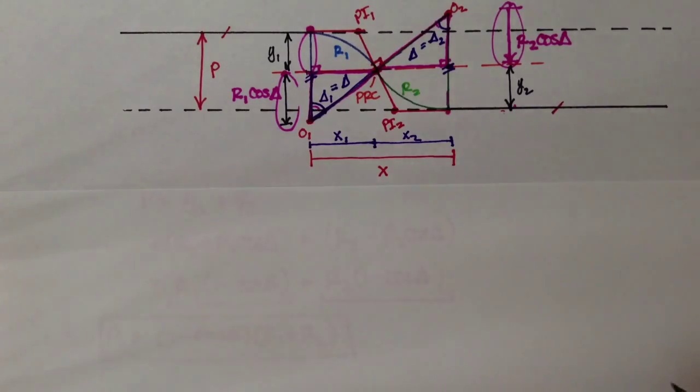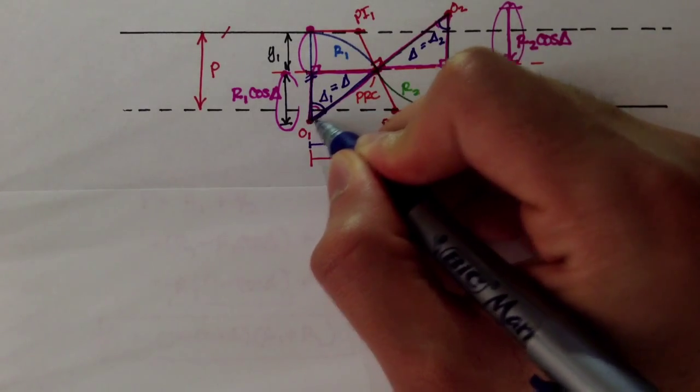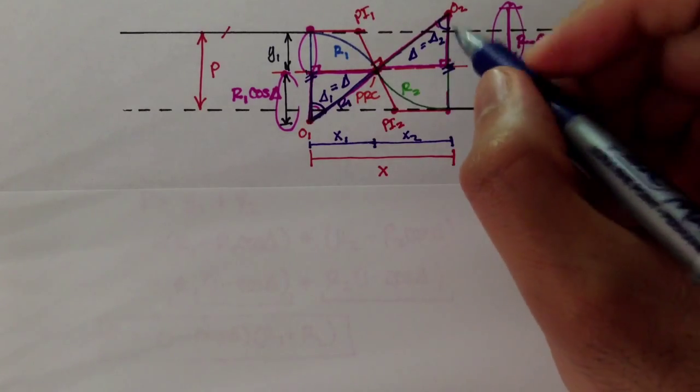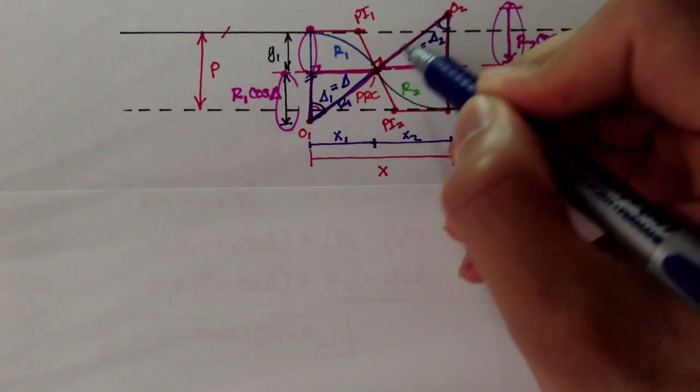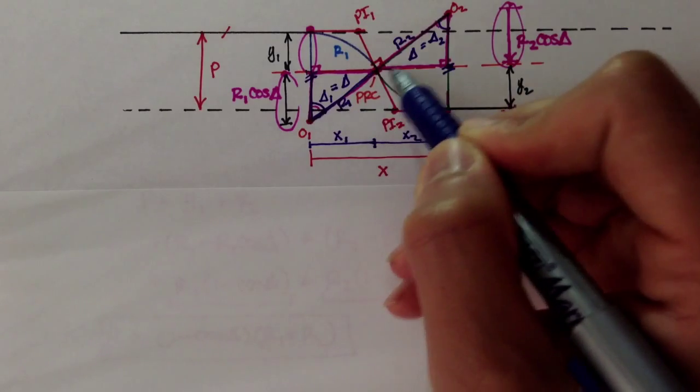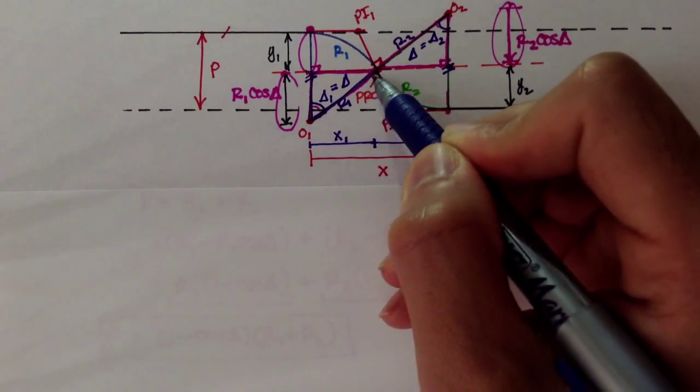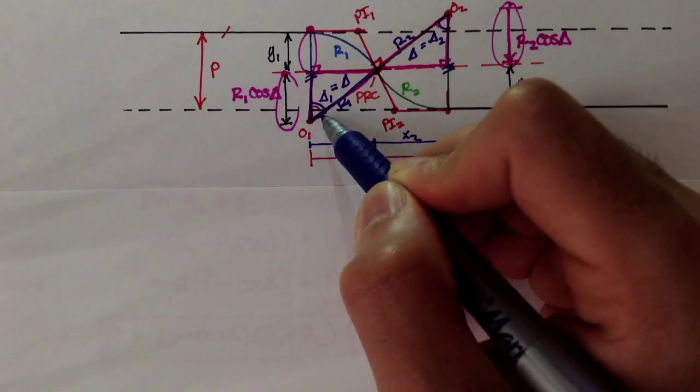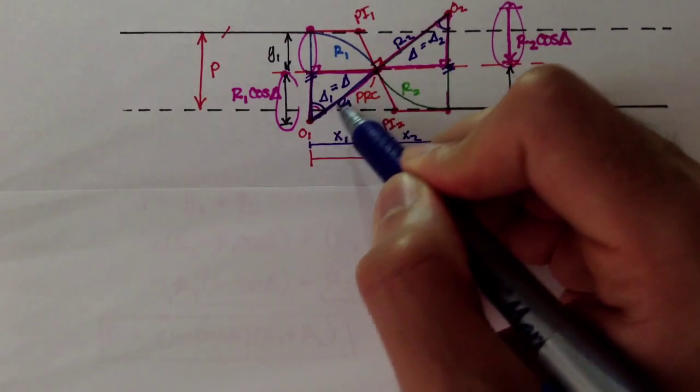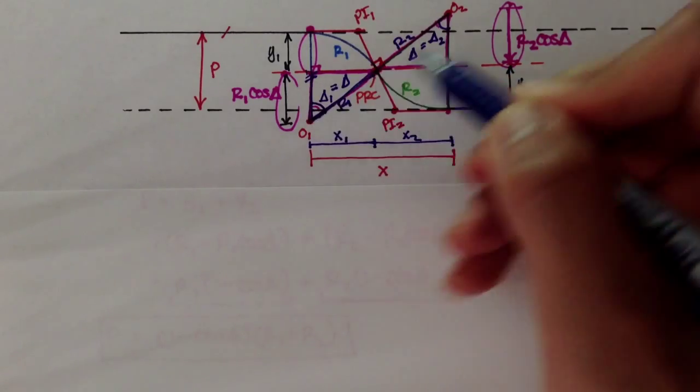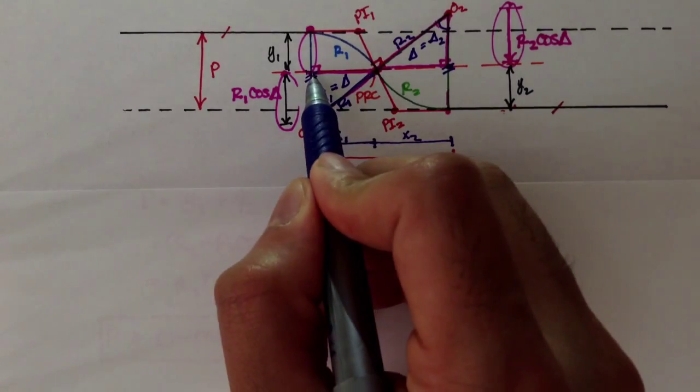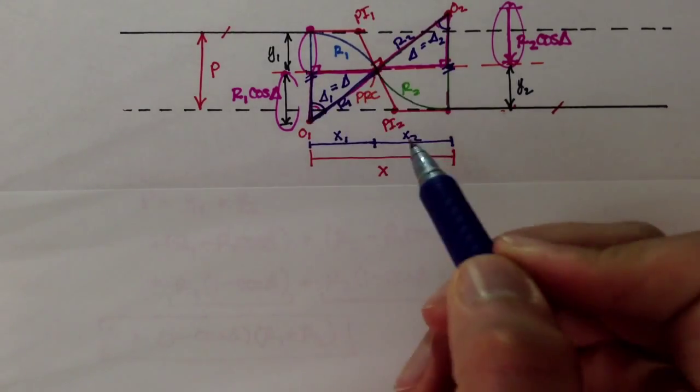And, if we remember from the last video, this distance from origin 1 to PRC is radius 1. And the distance from origin 2 to PRC is radius 2. These two radii become the hypotenuse, hypotenuses, is that even a word, plural of hypotenuse? They become the hypotenuse of this triangle and this triangle, right? So, X1 is the distance from here to here, okay?